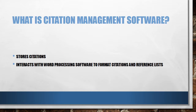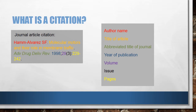Citation management software stores citations. It also interacts with word processing software to format citations and reference lists. A citation to a journal article includes elements like the names of the authors responsible for writing the article and the title of the article.